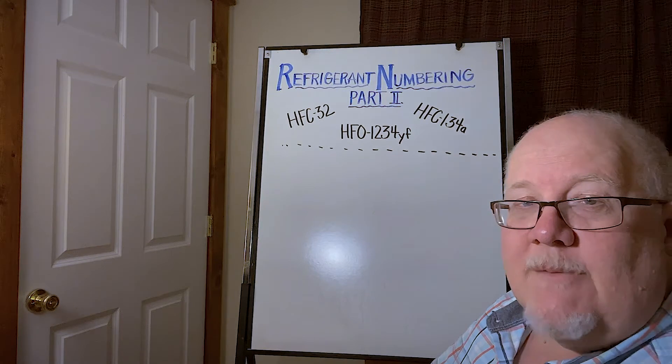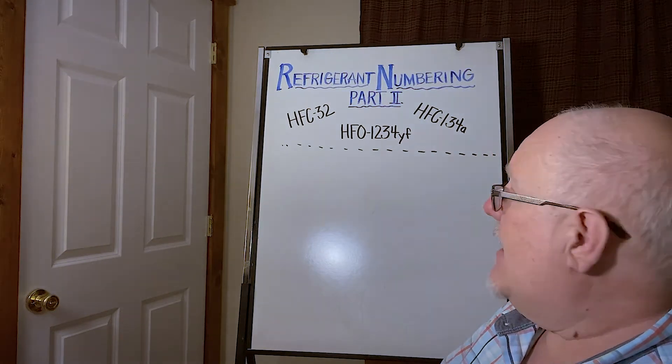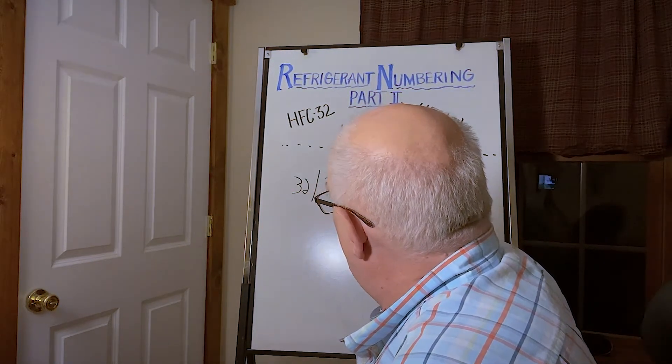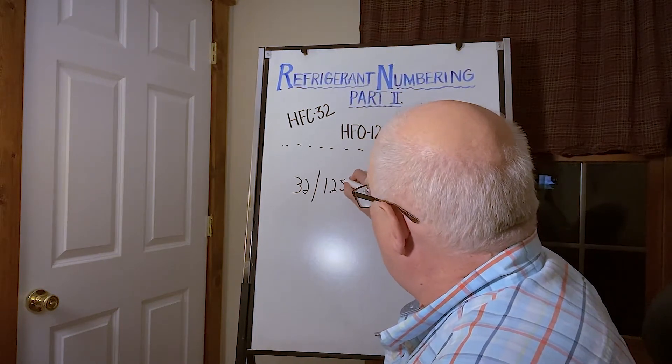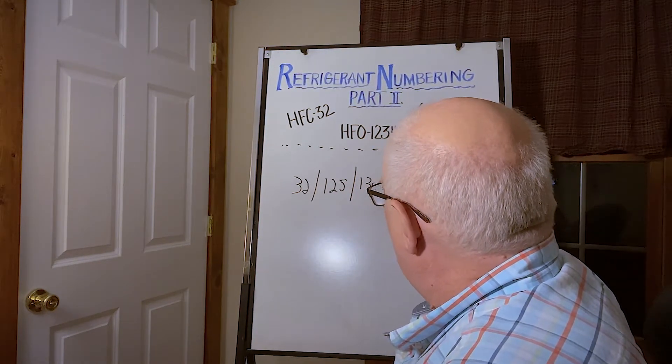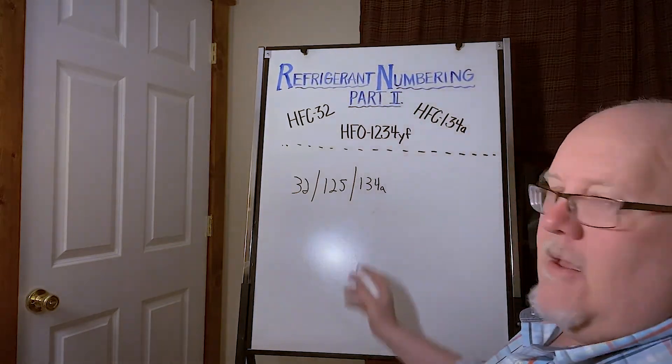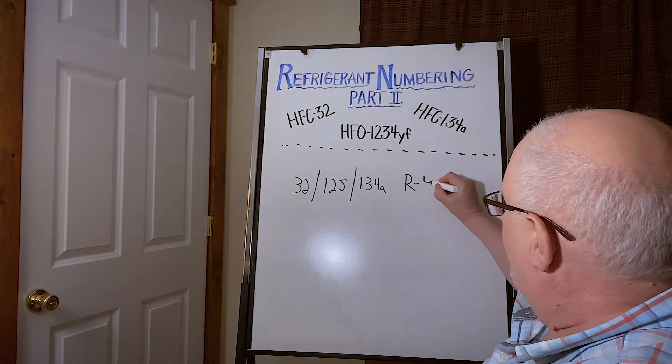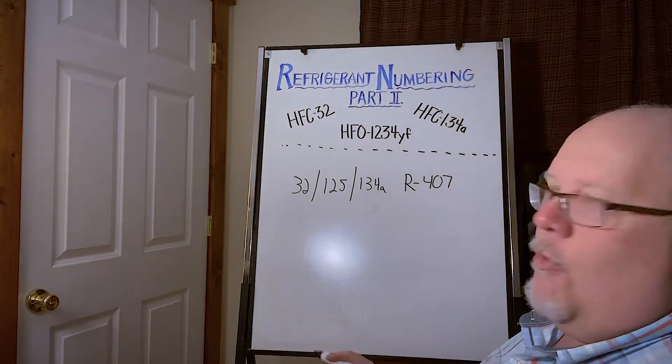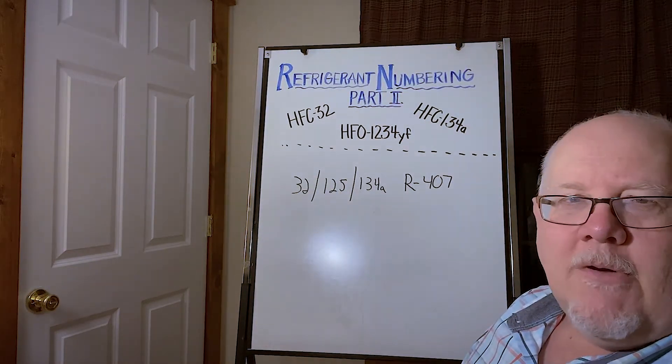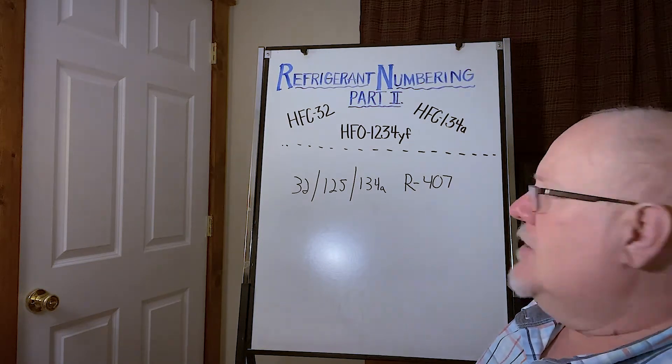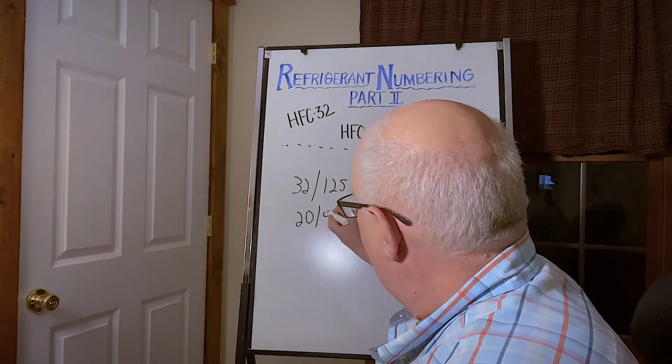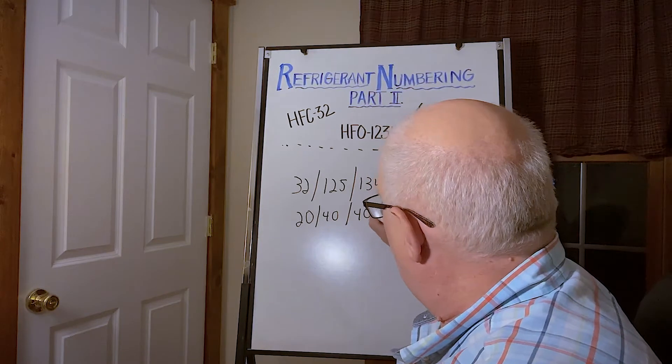So for instance, let me give you an example, something widely used. If we were to make a blend of three components, say HFC-32, HFC-125, and HFC-134A, that formula was assigned an R number of R407 when the first combination of those three components was presented. So it happened to be that those were put together in a composition of 20, 40, 40 percent.